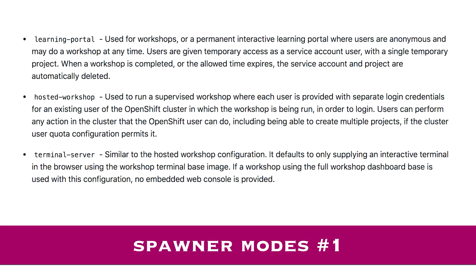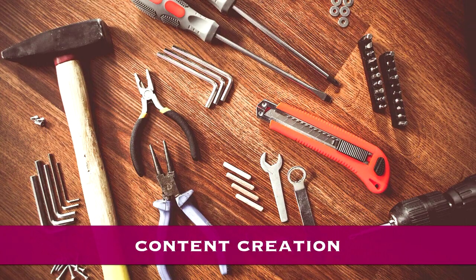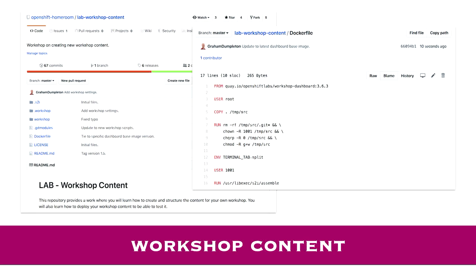For deployment options, we have several approaches. The anonymous user one is called the learning portal - something we host permanently on the net for anyone to use at any time. We also have options tied into OpenShift's own authentication or Keycloak with registration. For content creation, we have Docker images: a base terminal image which just provides a terminal, and a dashboard image you build on top of to add workshop content in specific directories.